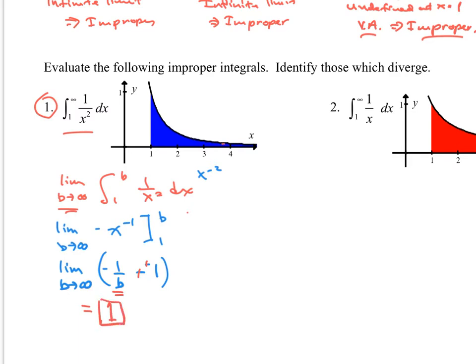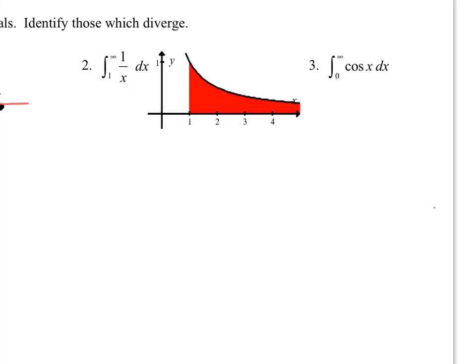This thing goes on forever, and it equals an exact area of 1 even though the curve goes on forever — that is pretty cool. Now example number 2: this one also goes on forever, so we're probably going to get an exact value too. We go limit as b goes to infinity of the integral from 1 to b of 1/x dx.